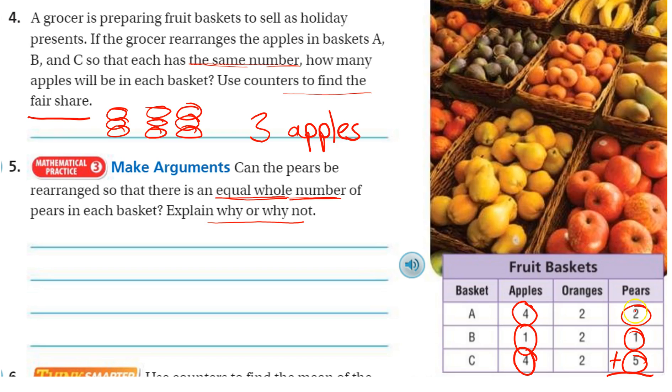Five plus one is six, seven, eight. And if we have eight, and we divide it by three baskets, three goes into eight two times, six minus gives us two remainder.